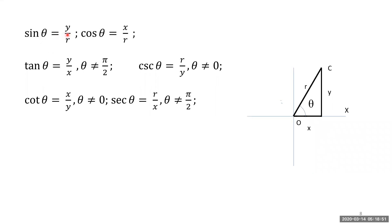Sine θ equals opposite side divided by hypotenuse. The hypotenuse r is always positive since it is measured from the center outwards. So r is positive in all four quadrants, but x and y coordinates change sign. In quadrant two, x is negative and y is positive; in quadrant three, both x and y are negative; in quadrant four, x is positive and y is negative. Therefore: sin θ = y/r, cos θ = x/r, and tan θ = y/x.